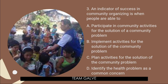Question number three: An indicator of success in community organizing is when people are able to — A, participate in community activities for the solution of a community problem; B, implement activities for the solution of the community problem; C, plan activities for the solution; or D, identify the health problem as a common concern. The answer is letter A. Participation in community activities for resolving a community problem may be in any of the processes mentioned in the other choices; hence the answer is A.